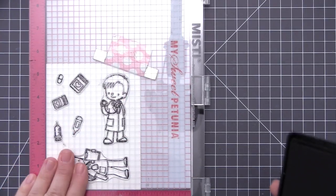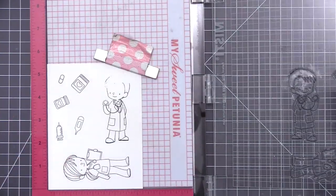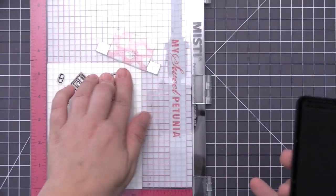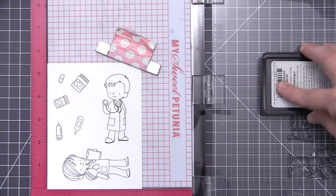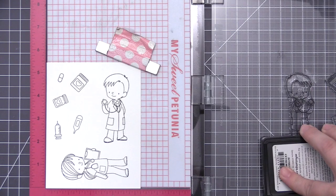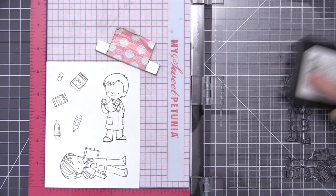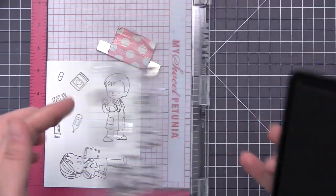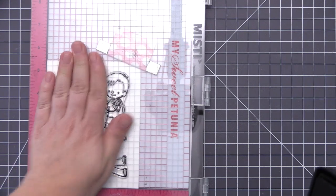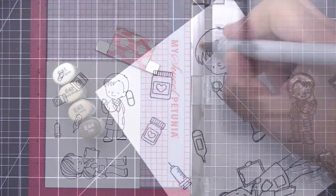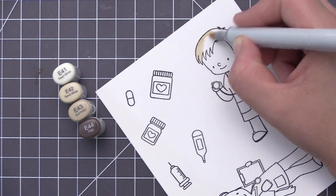I'm going to ink these up with Extreme Black ink. This is a Copic-friendly ink, and since I'm going to be using my Copic markers to do the coloring, I decided to use this ink. I'm going to stamp these images twice—that's just going to ensure that I have a really nice crisp black outline for my images. Once I have them fully stamped, I'll remove them from my MISTI and do my coloring.